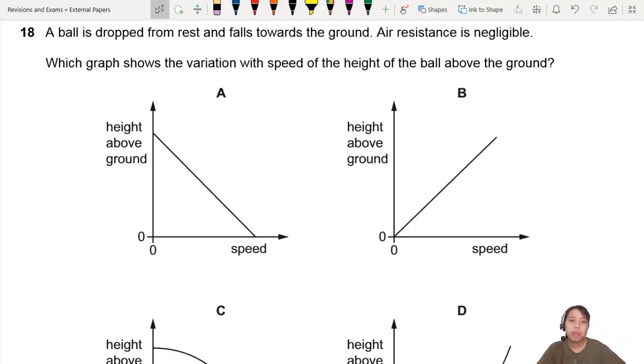A ball is dropped from rest and falls towards the ground. Dropped from rest is an important clue. Air resistance is negligible. Which graph shows the variation with speed of the height above the ground?